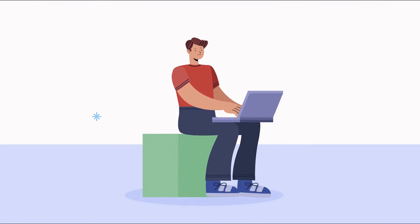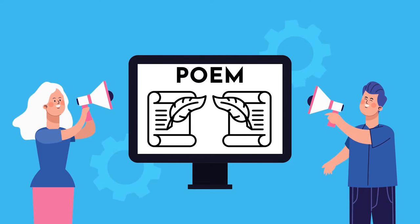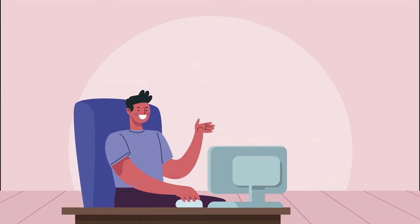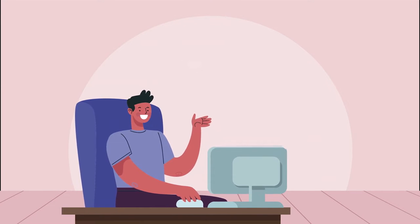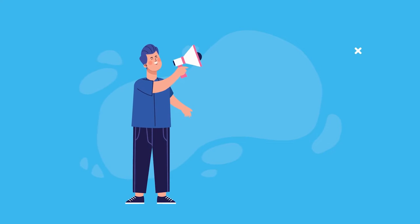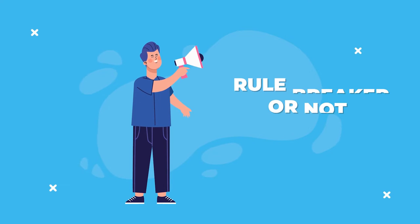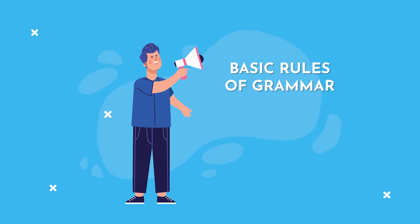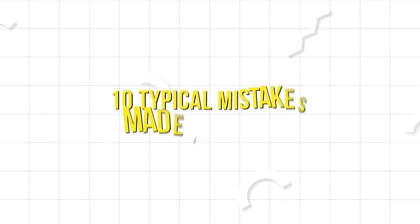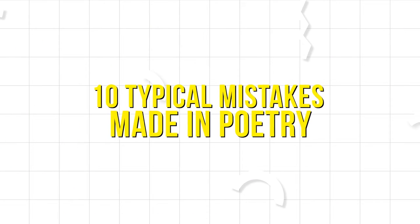If you've ever written a poem, then you probably know that there's a pretty large debate over how we should be using grammar and punctuation. Some writers violate grammar laws — they call it creativity — while others tend to run the more traditional route, sticking consistently to the rules of universal writing guidelines. But here's the hard truth: whether you're a rule breaker or not, you need to understand the basic rules of grammar. There are 10 typical mistakes made in poetry that are super easy to avoid.